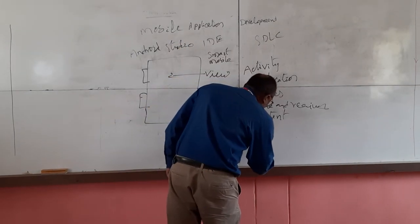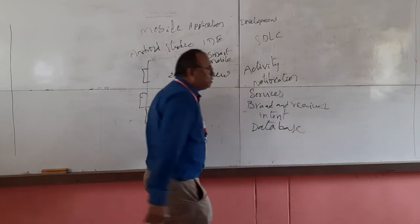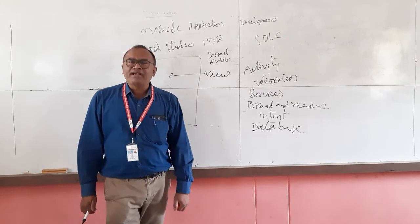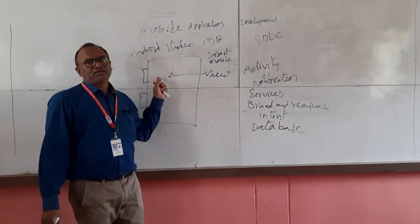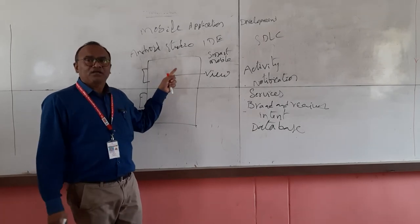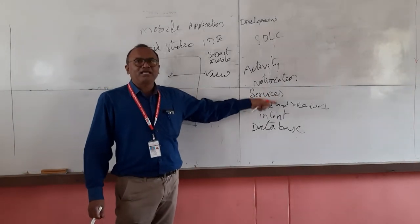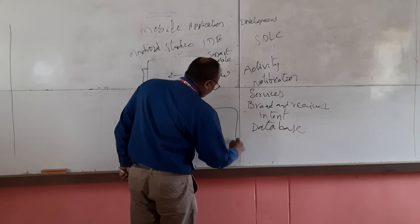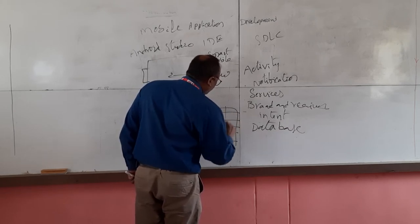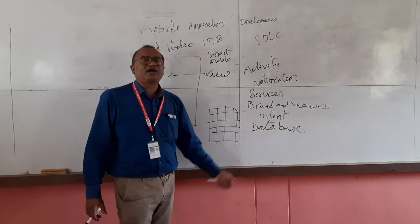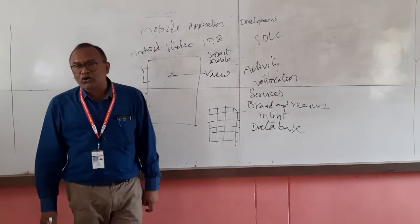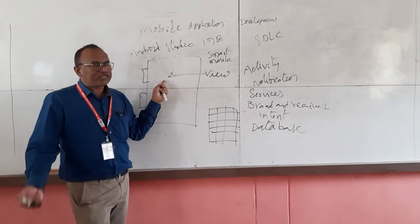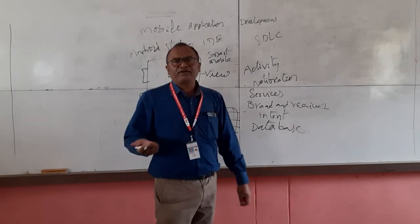Then we have the database. Every software application should have the functionality for a database. Database is meant for storing information collected from users through the user interface. That information is processed through the service and then sent to the database. The database stores information in the form of tables with rows and columns. If you want to save data created today for future usage, you can save it with the database. There are three different types of storage: flat file, tables, and shared preferences.